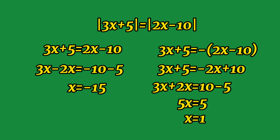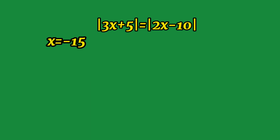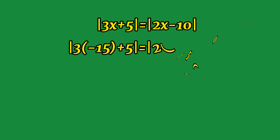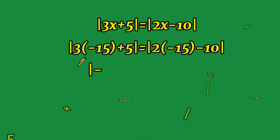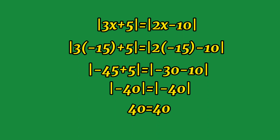We have already solved the values of x of our absolute value equation. Now let us check if these values hold true. Starting with x = -15, substituting into the equation: the absolute value of 3(-15) + 5 equals the absolute value of 2(-15) - 10. This gives the absolute value of -40 equals the absolute value of -40, so 40 = 40. Therefore, x = -15 is correct.